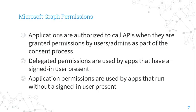Microsoft Graph has both granular permissions that control the access that apps have to digital resources like users, groups, and emails. As a developer, you decide which permissions to request for Microsoft Graph. When a user signs into your app, the user or in some cases an administrator is given a chance to consent to these permissions. If the user consents, your app is given access to the resources and APIs it has requested. For apps that don't require a signed-in user, permissions can be pre-consented to by an administrator when the app is installed.